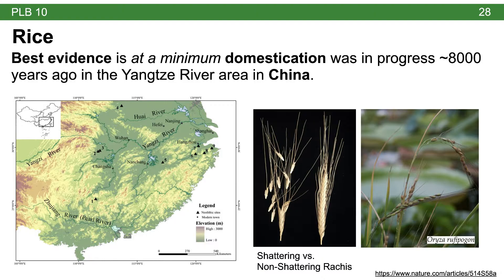Rice domestication isn't a simple story. In wild rice (Oryza rufipogon), there is a shattering rachis — once the plant flowers and fruit forms, those individual fruitlets break apart and disperse very quickly. For harvest, we need those fruitlets to stay attached. The wild ancestor has a very broad distribution across Asia, from China to India, which has led both countries to claim the origin of rice.